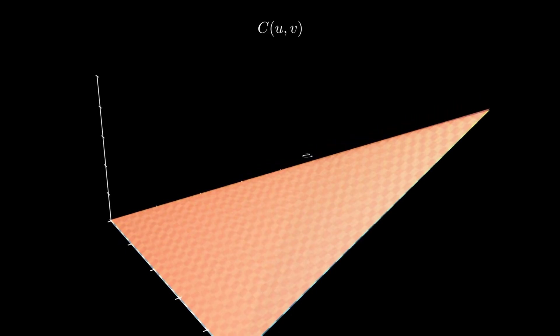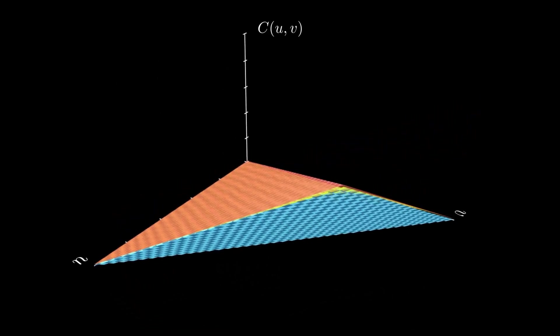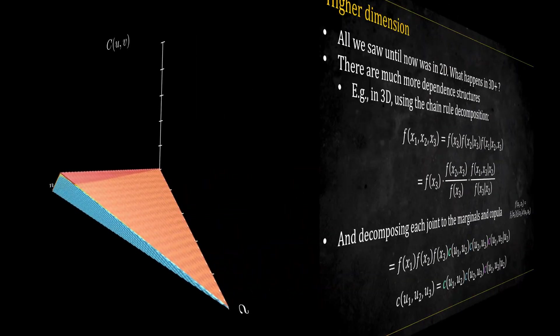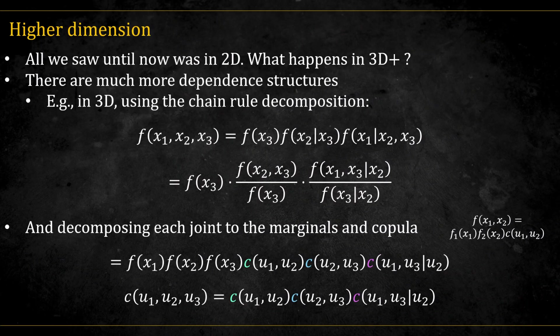I'll also leave a link in the description to a GeoGebra 3D graph that you can play with yourself. So far, we've looked at dependence between two variables. But what happens when we move to three or more? The dependence structure becomes complicated very quickly.